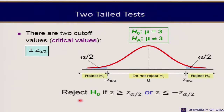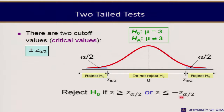For a two-tailed test, we divide alpha by 2. To the left of the normal curve we have −Z_{α/2}, and to the right we have +Z_{α/2}. We reject the null hypothesis if Z ≥ Z_{α/2} (falling to the right) or Z ≤ −Z_{α/2} (falling to the left).